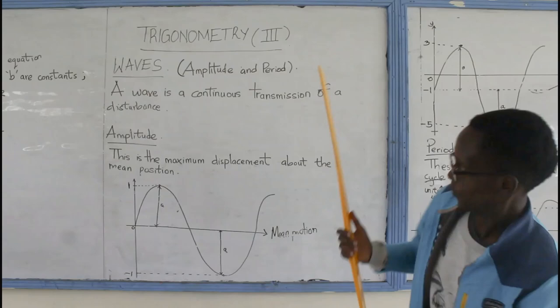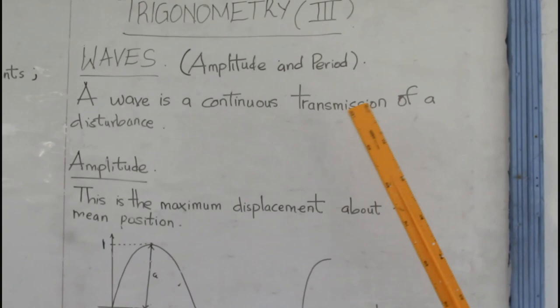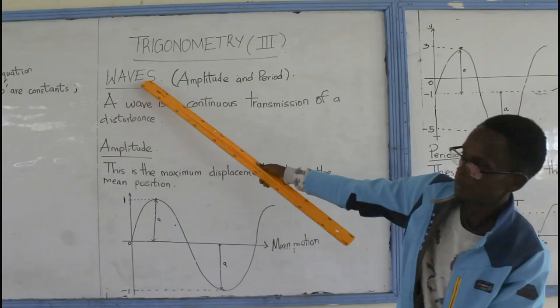So, what is a wave? From the definition here, a wave is a continuous transmission of a disturbance and these are just the dramatic representations of the waves themselves.